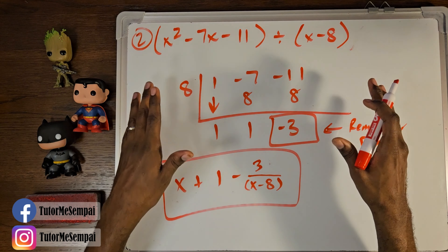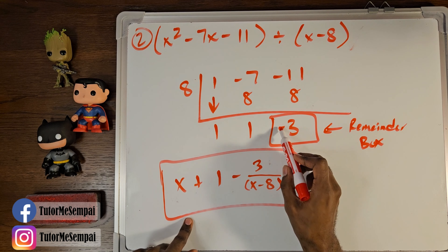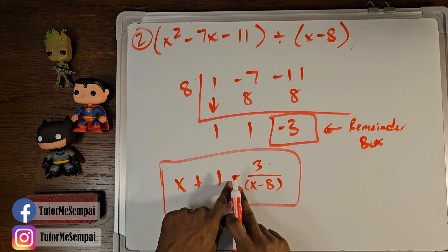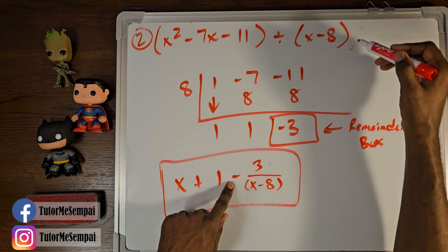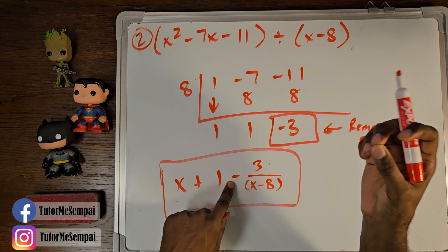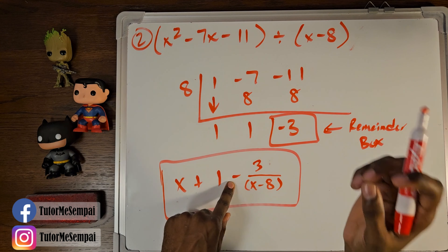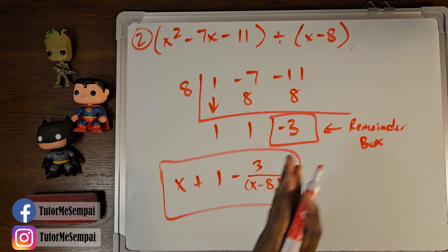Now we have a remainder. Just like we did for polynomial long division, we take this remainder, keep the sign, take the constant and put it over whatever the divisor was — the whole divisor, x minus 8. So x plus one minus three over x minus 8 is our entire answer. A lot less writing, but when you have a remainder, you take the sign, put the constant over the entire divisor — just like we did for polynomial long division. And this is how you handle your synthetic division.